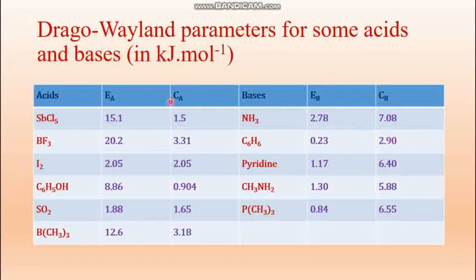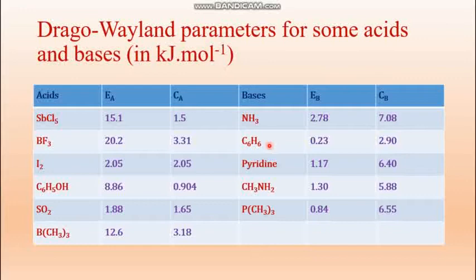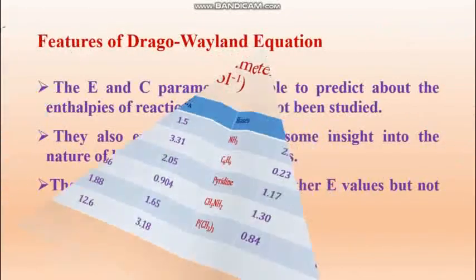We find that when BF₃ combines with NH₃, the most stable adduct will be formed. On the other hand, when sulfur dioxide combines with benzene, the least stable adduct will be formed.